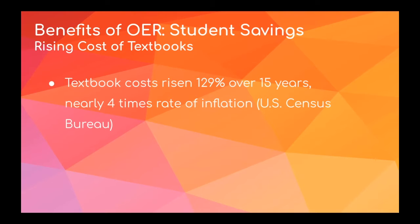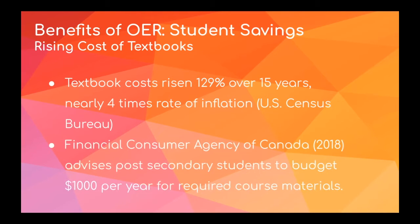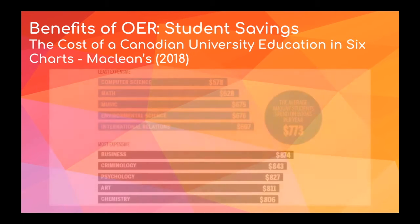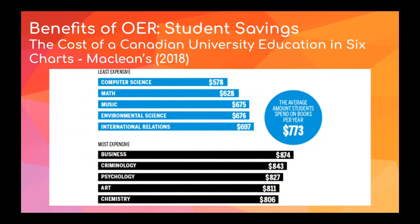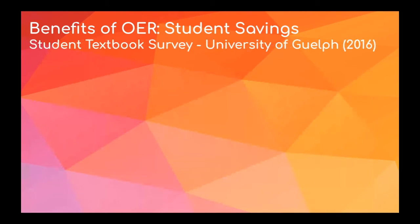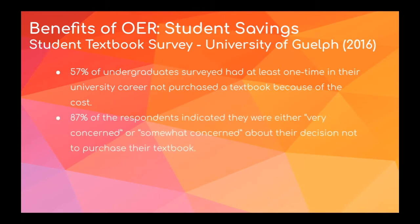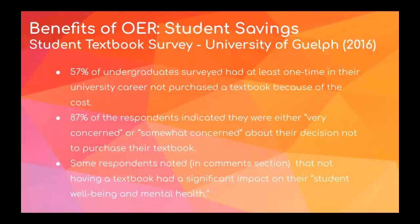The Financial Consumer Agency of Canada, as well as Niagara College itself, recommends students budget at least $1,000 per year for course materials on top of their tuition. McLean's found that students spend an average of $773 per year on textbooks. The University of Guelph found in a 2016 study that 57% of undergrads had not purchased a textbook at least once because of the cost, and 87% of those respondents indicated concern about the impact this would have on their ability to succeed, with some commenting on the damaging effects on their mental well-being.